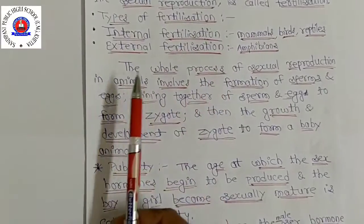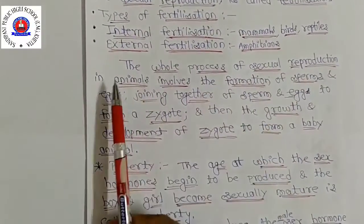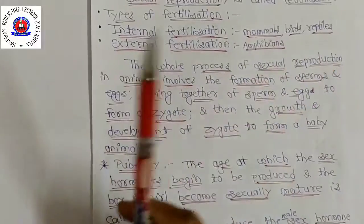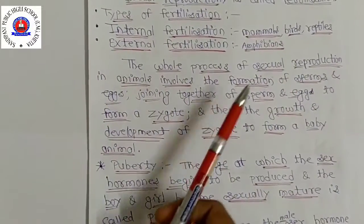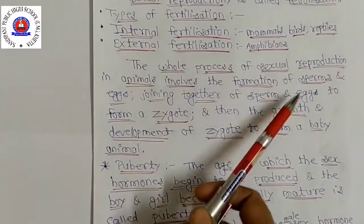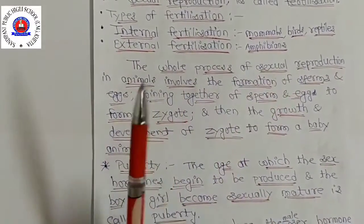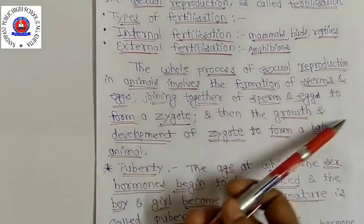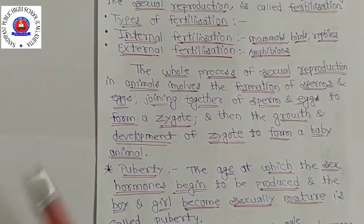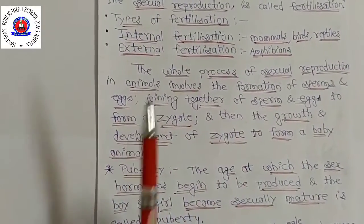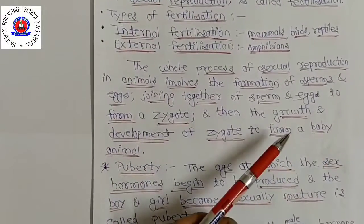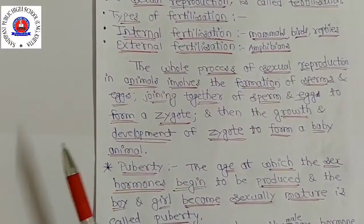From this discussion we conclude that the whole process of sexual reproduction in animals involves: the formation of sperms and eggs, the joining together of sperm and egg to form a zygote, and then the growth and development of the zygote to form a baby animal.